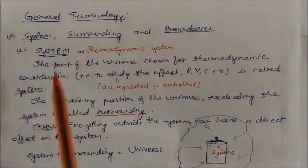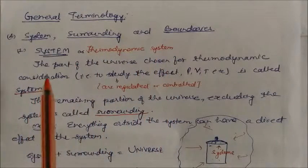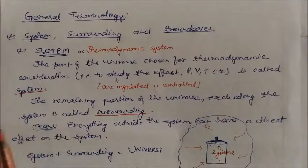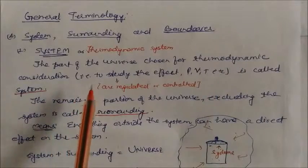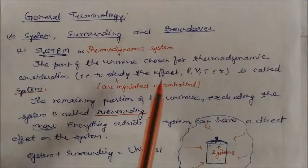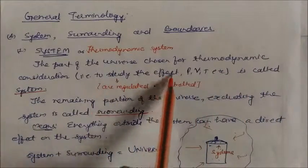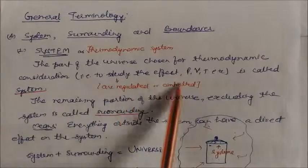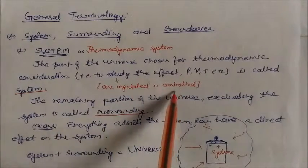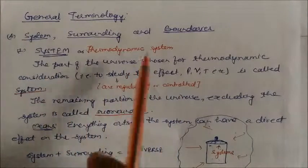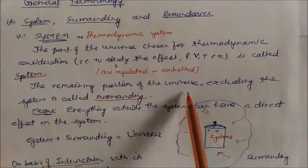Now we will see some general terminology: system, surroundings, and boundaries. A thermodynamic system is the part of the universe chosen for thermodynamic consideration — the part chosen to study the effect of variables like pressure, volume, or temperature. This part can be regulated or controlled, which is why it is called the system.